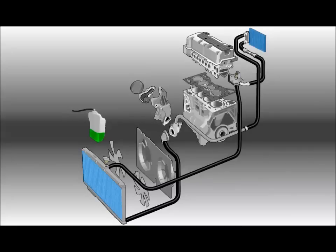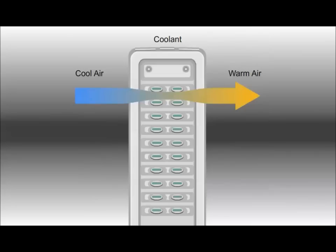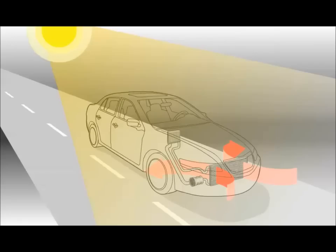The radiator and heater core both act as heat exchangers to dissipate engine heat from the coolant to the air. The radiator sends excessive heat into the outside air, while the heater core directs engine heat into the passenger compartment.